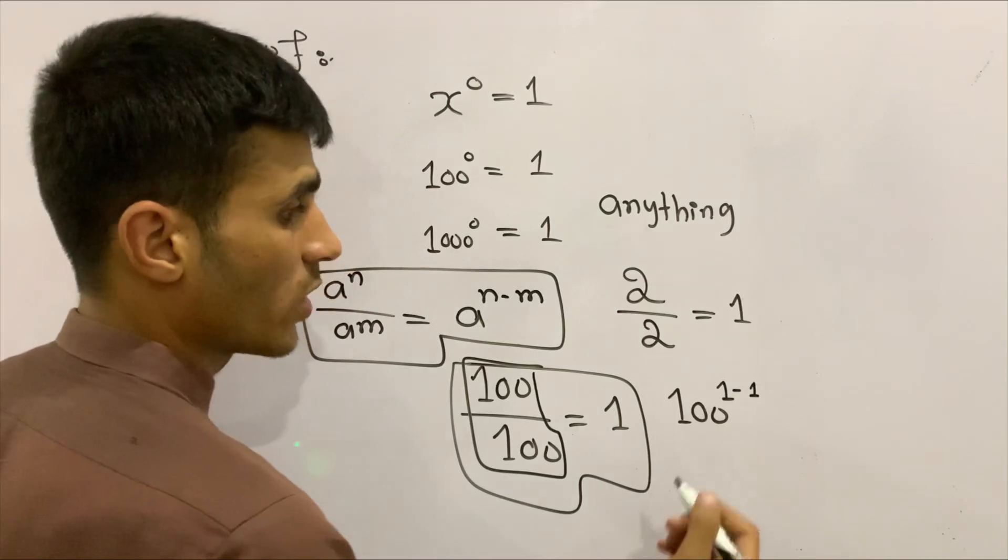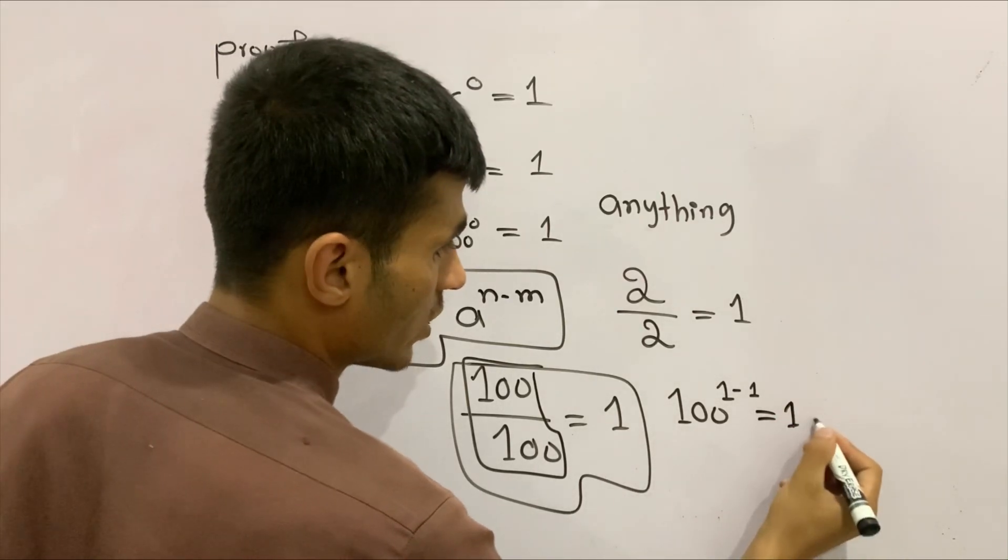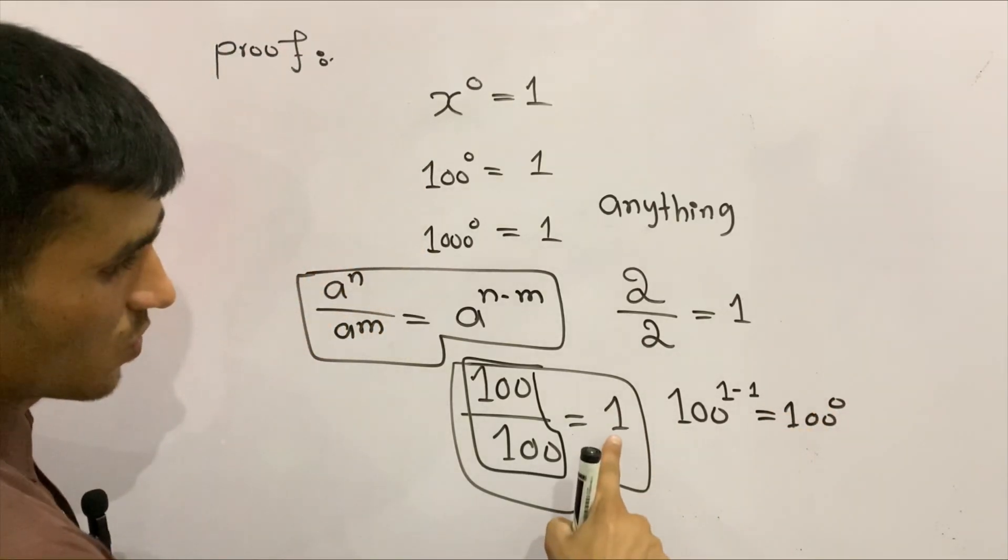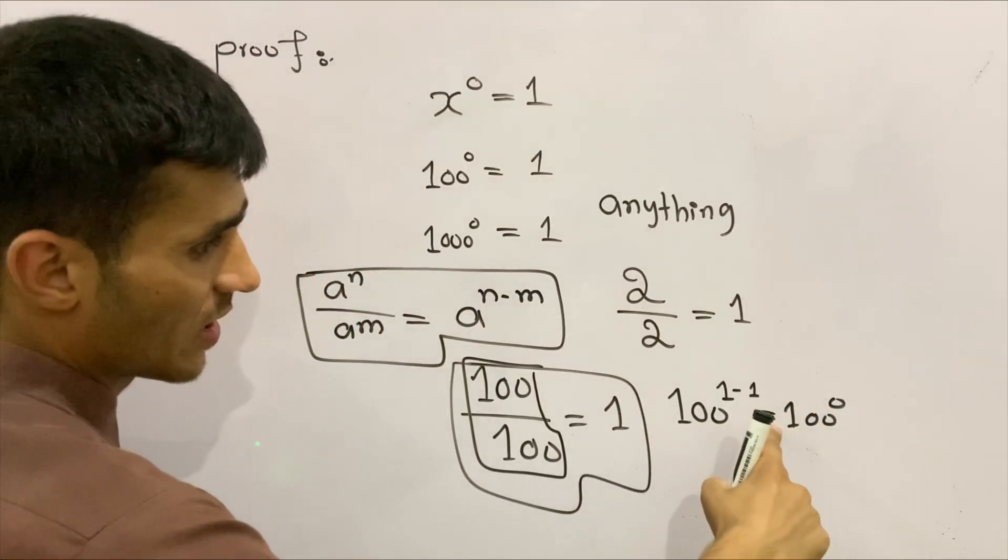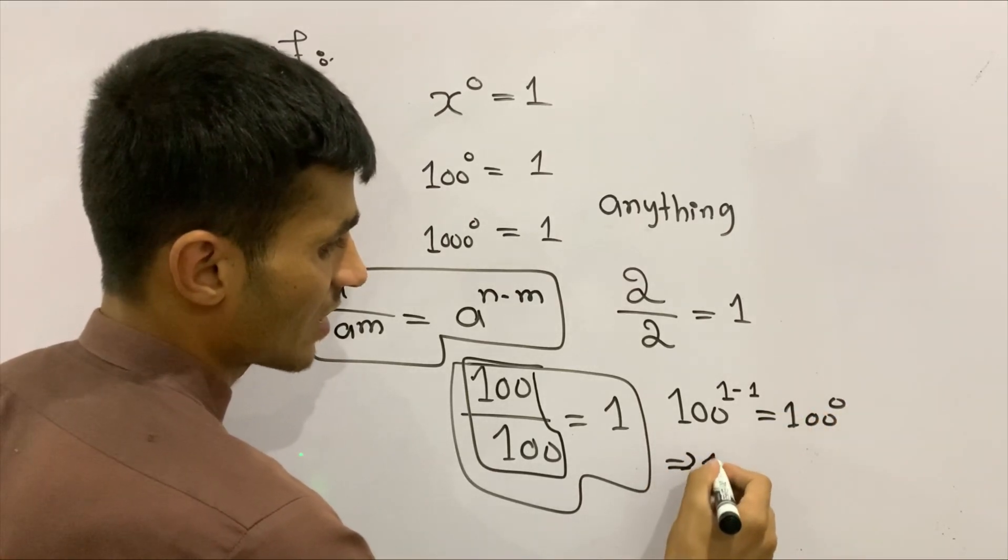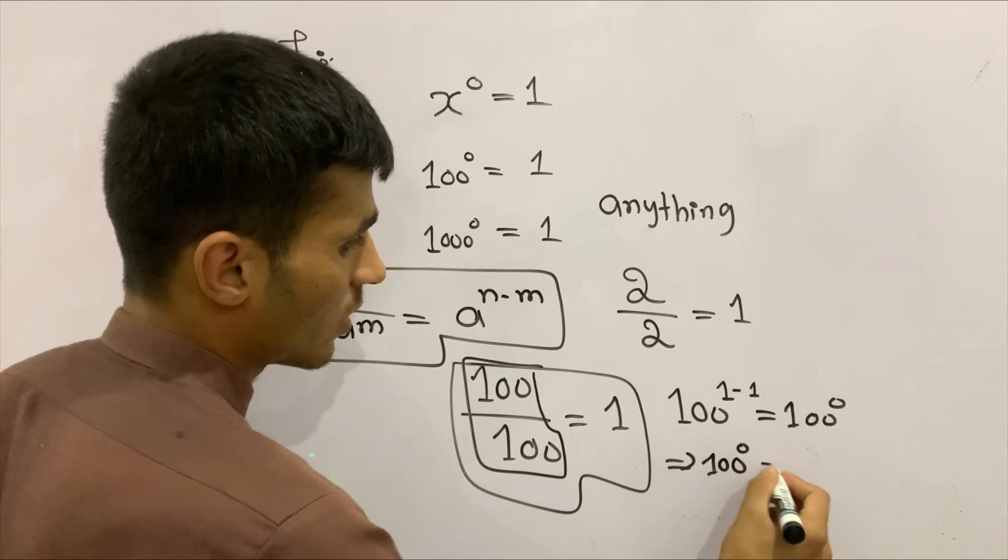So 100 to the power of one minus one is zero. Therefore, one equals 100 to the power of zero. This implies that 100 to the power of zero equals one.